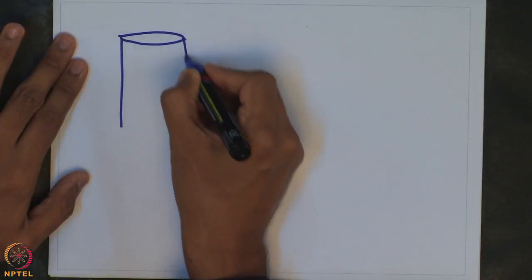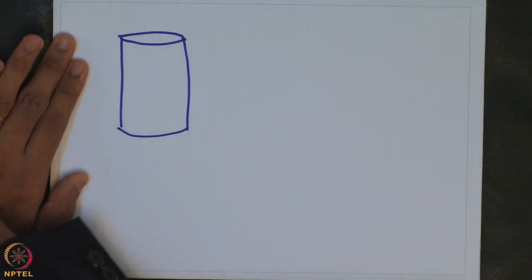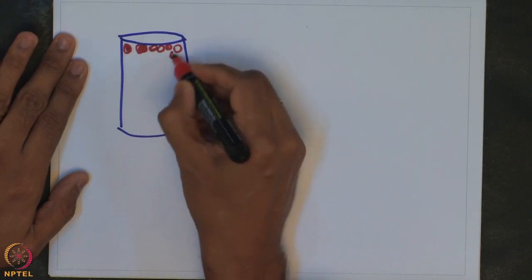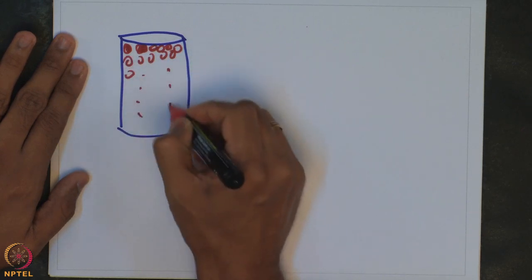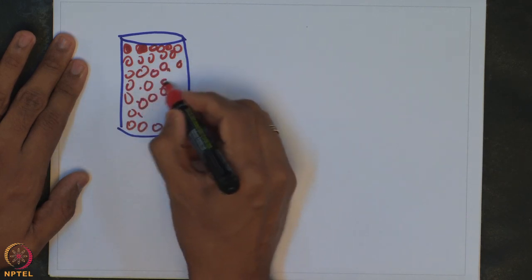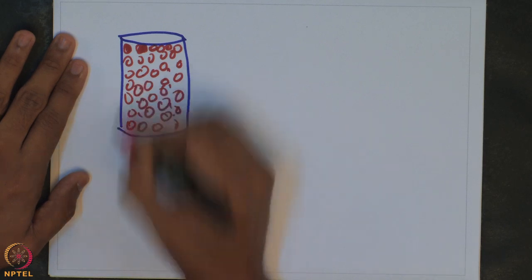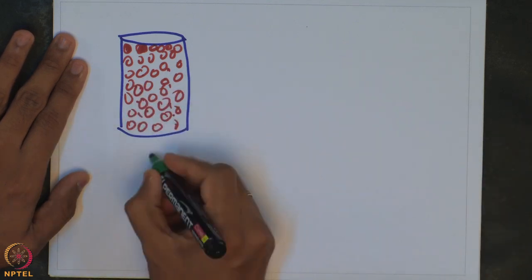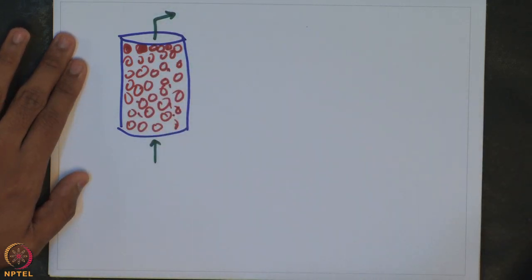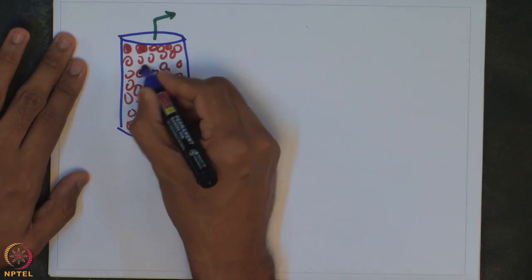How is a reaction typically conducted? It is typically conducted in a reactor — let us say a packed bed reactor. Suppose we have a tank which is a reactor, filled with catalyst everywhere. And let us say that the fluid is actually flowing from bottom to the top of the reactor, and the reaction is happening at the active surface of the catalyst.